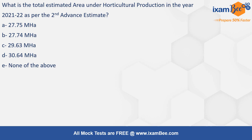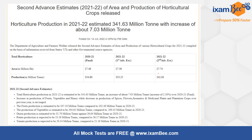Here is the first question: What is the total estimated area under horticultural production in the year 2021-2022 as per the second advance estimate? The second advance estimate of horticultural production has recently come out — what is the total area under cultivation? Pause the video and answer. The answer here is 27.74 million hectares. You need to remember the exact figure.